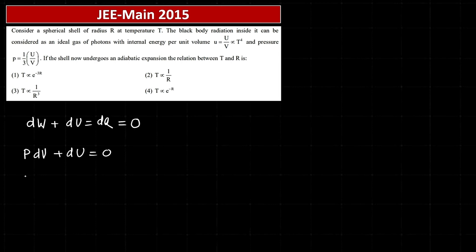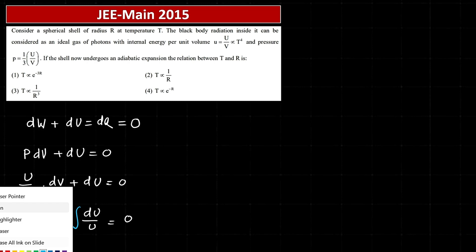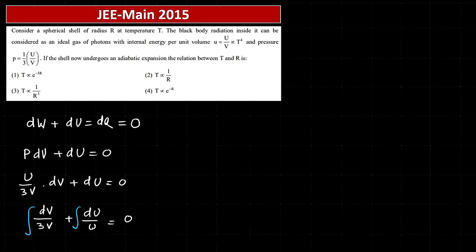So U by 3V into dV plus dU. Just rearrange: dV by 3V plus dU by U equals zero. Integrate it on both sides. That is an indefinite integration, so on integrating we'll get some constant.